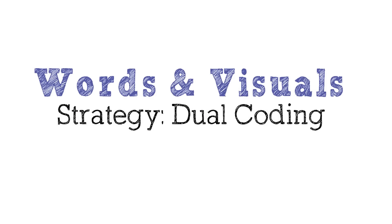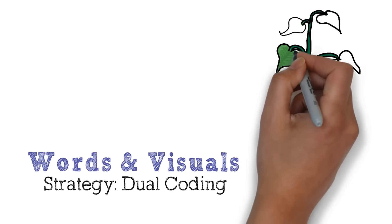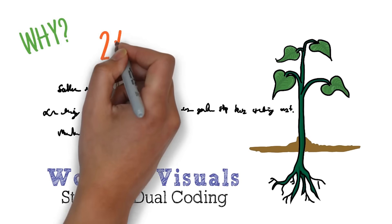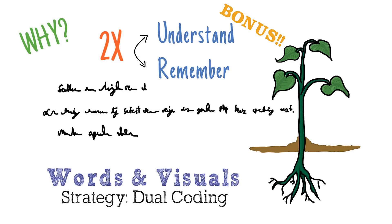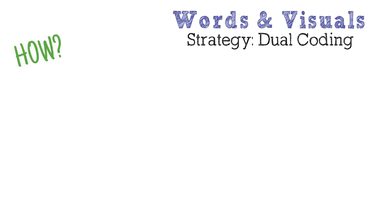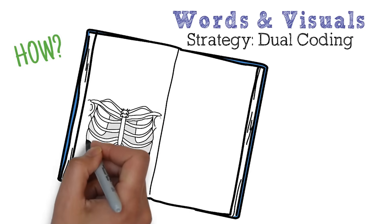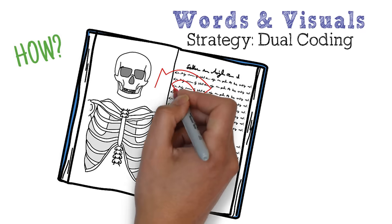Combine verbal material with visuals. Doing this gives you two ways of understanding and remembering the information later on. Find visuals in your notes and textbook and examine how the words are describing what's in the image.